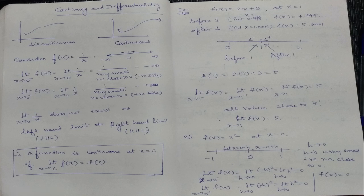Now, what is the definition of continuity? That is what we are going to see. The function 1/x is not continuous only at 0; at all other points it is continuous.